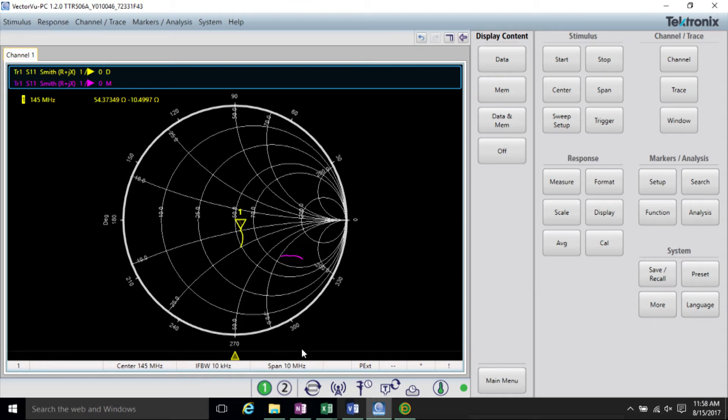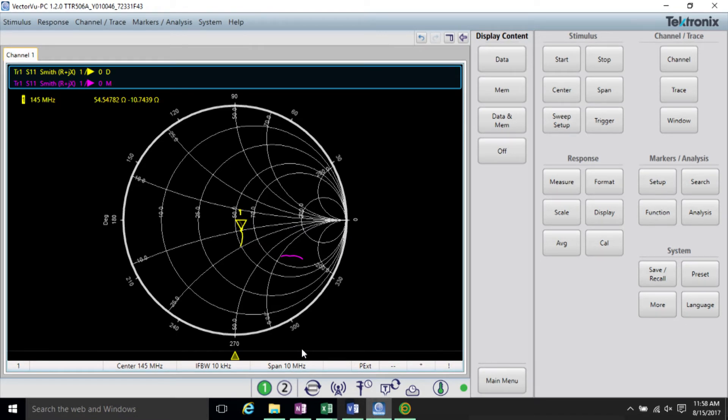Continuing on, now I have the series inductor added to the matching network. And you can see our match point or impedance has moved closer to the center of the Smith chart. It's not perfectly at the center. And so to improve this, I'd probably repeat this process again to get the components exactly where I need them. But it's pretty close.